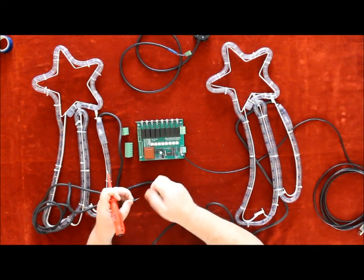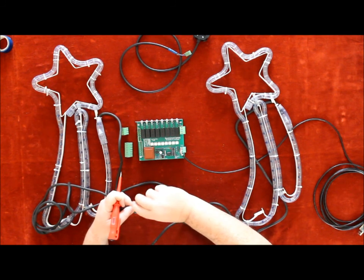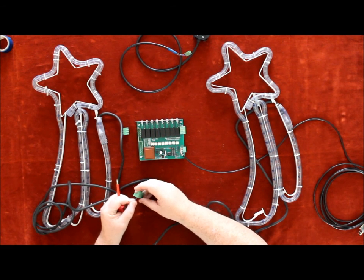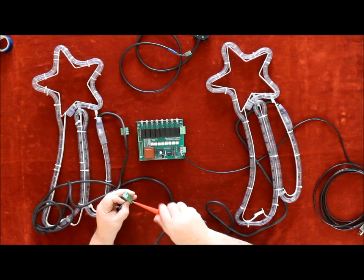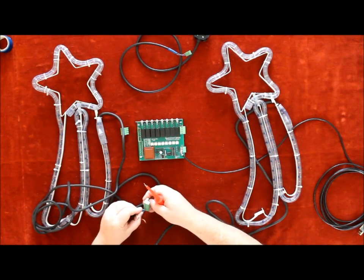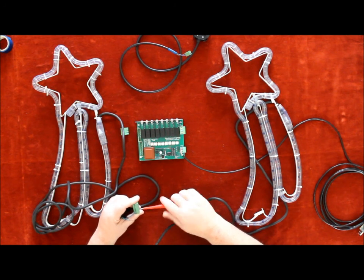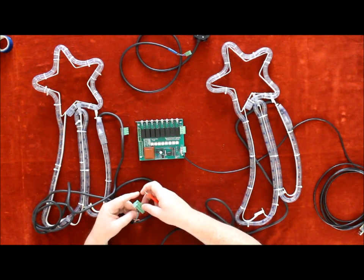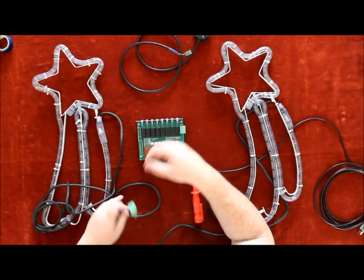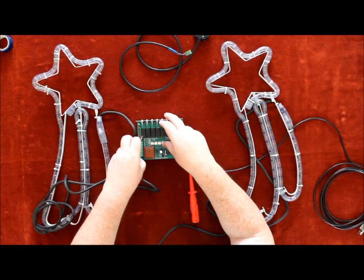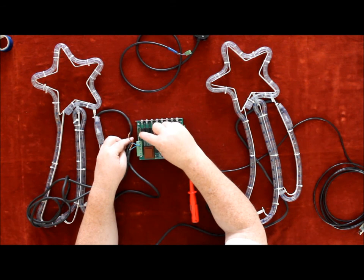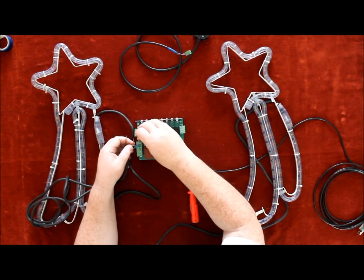I'm just going to wire these two up. So the neutral block, which all the neutrals go into, that will go into the neutral block like that. And the two lives will go into channels one to four down this side.